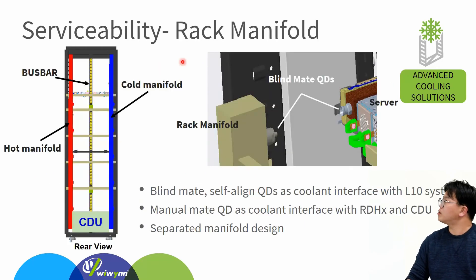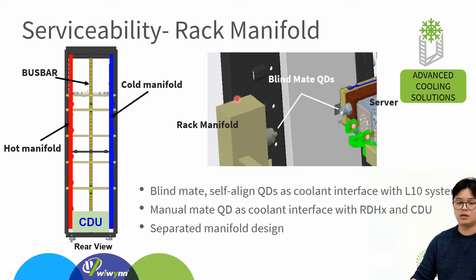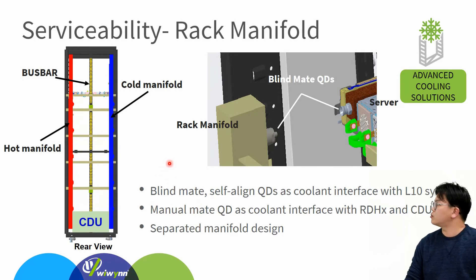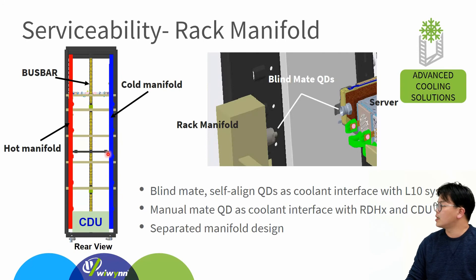For the REC manifold, in order to maintain service from the co-air interface as currently used, we plan to use the primary self-alignment quick disconnector as the interface between the L10 system and the REC manifold. For the CDU and REC manifold connection, we prefer to use a manual quick disconnector to simplify the design. For the REC manifold, we prefer to use two separate manifolds to balance the connection force, and we can get more flexibility for quick disconnector sizing to meet different system requirements.